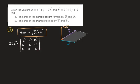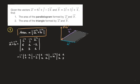Calculating this determinant along the top row gives: i times the determinant of the 2×2 matrix [1, −2; 3, 1], minus j times the determinant of [6, −2; 2, 1], plus k times the determinant of [6, 1; 2, 3].